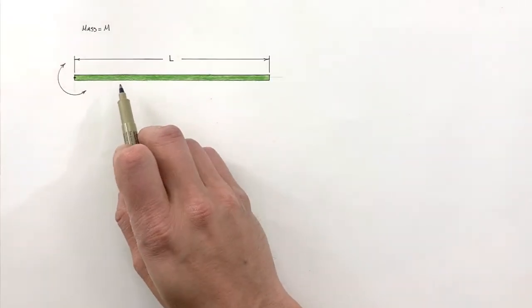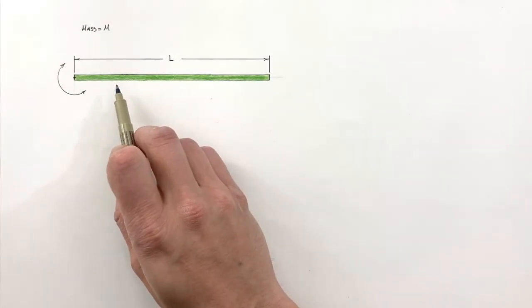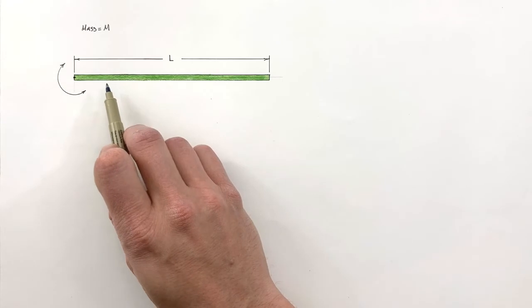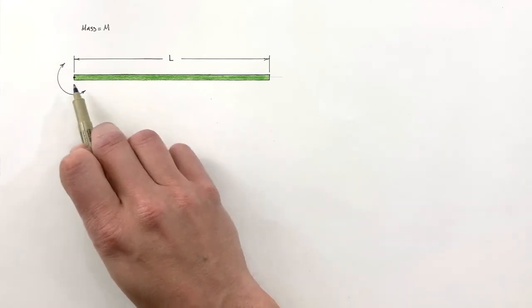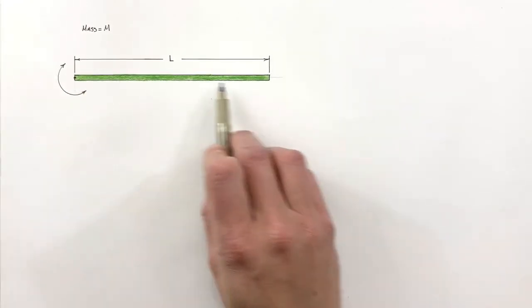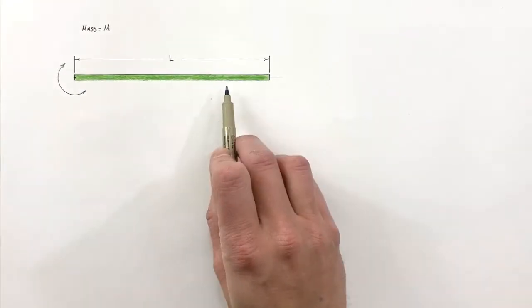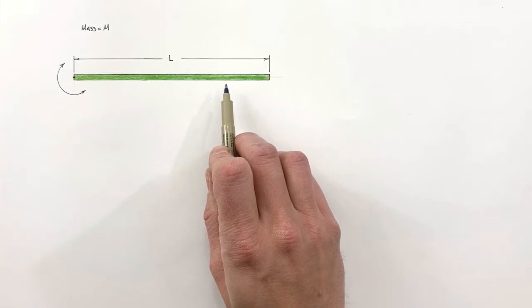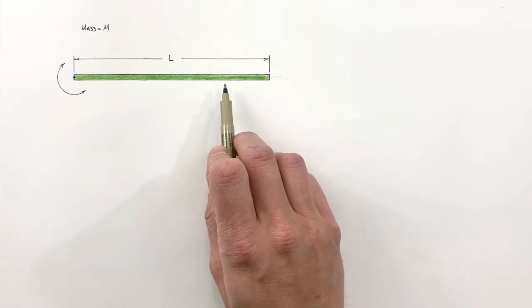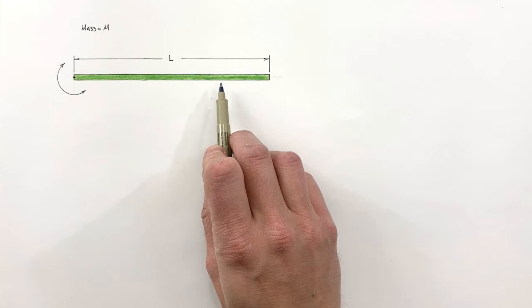Now there are several different types of moment of inertia. There's something called area moment of inertia, and that has to do with the stiffness of a beam — that's something we would talk about in beam deflection or statics in an engineering course — and that's not what we're talking about here.